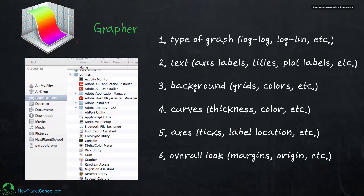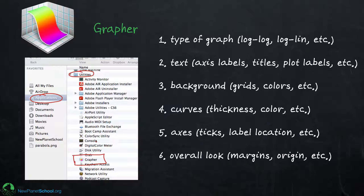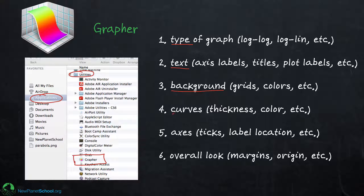To get into Grapher, go into Applications, then Utilities, and you'll find it right there. In this video, the follow-on to the basics one, we're going to talk about customizing — how you can choose the type of graph, logarithmic and so forth, how to put in text to label the graphs and make a text box, and how to vary the background, thickness, and color of the curves.